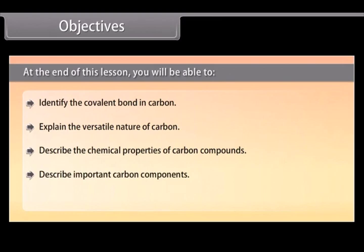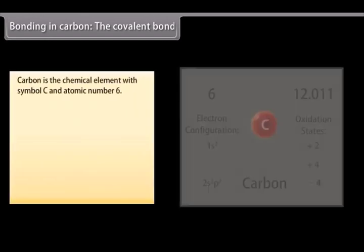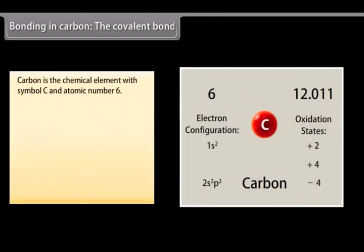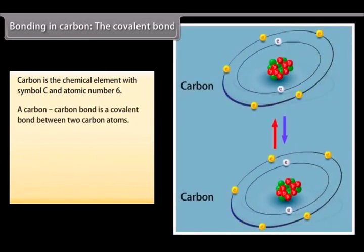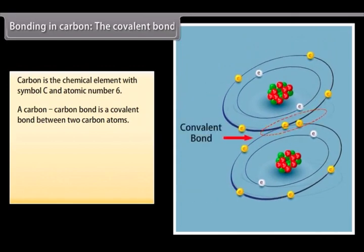Bonding in carbon. The covalent bond. Carbon is the chemical element with symbol C and atomic number six. As a member of group 14 on the periodic table, it is non-metallic with four electrons available to form covalent chemical bonds. A carbon-carbon bond is a covalent bond between two carbon atoms. The most common form is the single bond, a bond composed of two electrons, one from each of the two atoms.